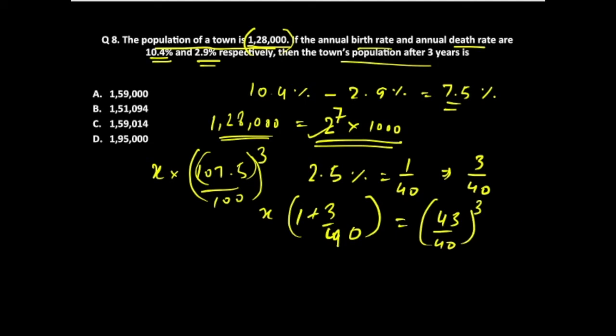So now our original value, that is 2 power 7 into 10 to power 3, would be multiplying with 43 by 40 power 3. By this simplified expression, we know that zeros in the denominator would be 3, because we are cubing it over here. This 3, so this thing gets cancelled out with this.